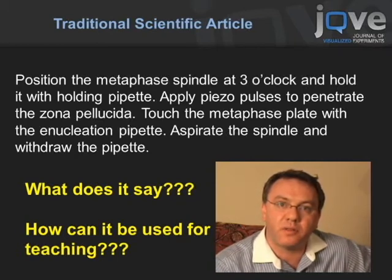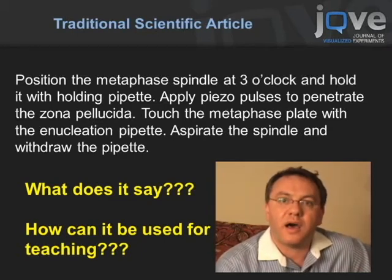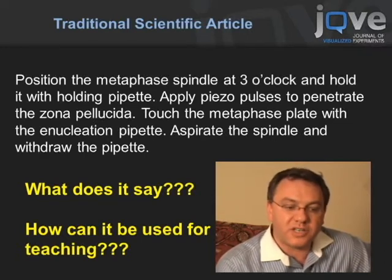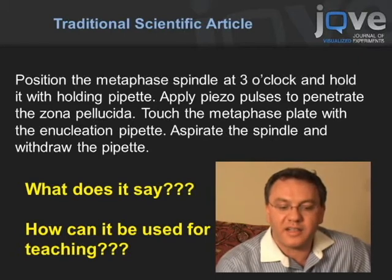Knowledge transfer does not work well with the current text format of science journals. There is a break in the productivity cycle that costs a lot of time and money. Scientists in labs try to read an article even in the most famous journals and spend lots of time and money trying to reproduce it. What you see on this slide is a segment from a typical scientific article describing a specific procedure in embryonic stem cell research. Let's read it together: 'Position the metaphase spindle at three o'clock and hold it with a holding pipette. Apply piezo pulses to penetrate the donor zona pellucida. Touch the metaphase plate with a nucleation pipette,' et cetera.